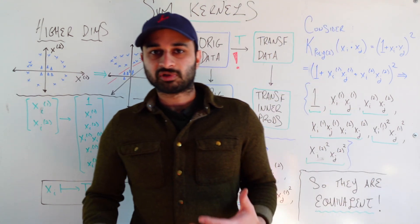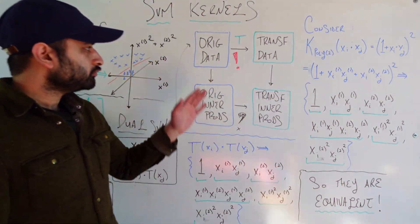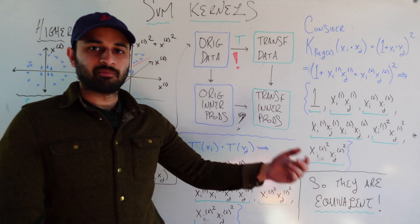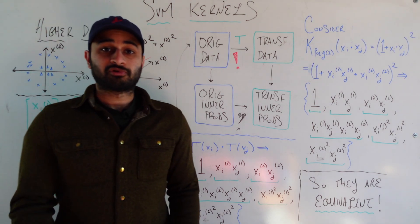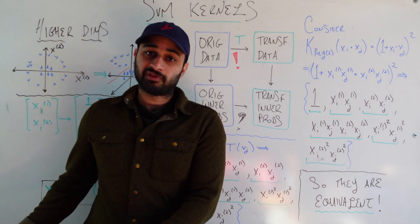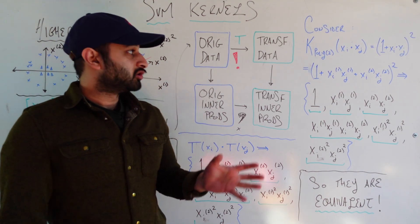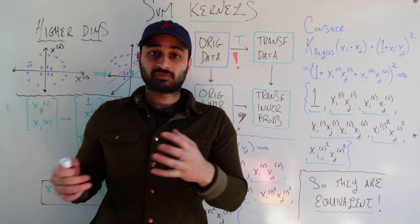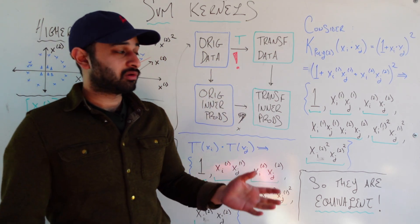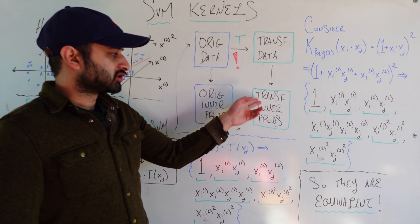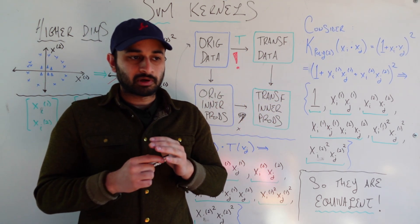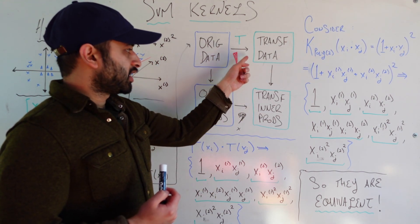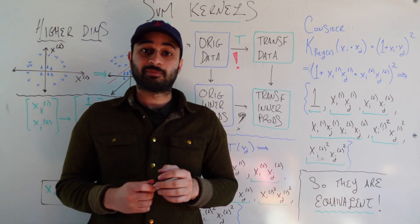Let's look at this diagram to better understand at a high level what we're doing. So we have our original data, and we're trying to get down to the transformed inner products. The most straightforward way to do it is that the first thing we're going to do is run the transformation T to get our transformed data, going from this two-dimensional space to the six-dimensional space, and then we simply take the inner products to get to these transformed inner products. Now, can we think of any issues with this approach?